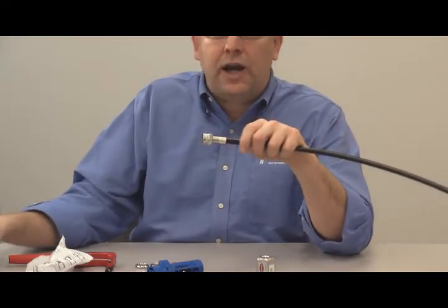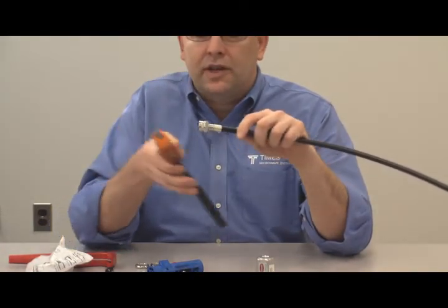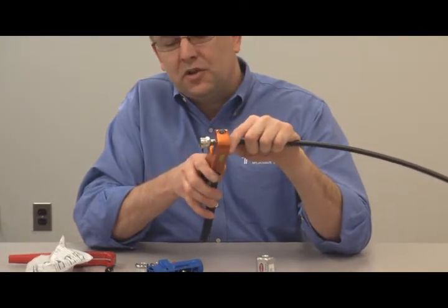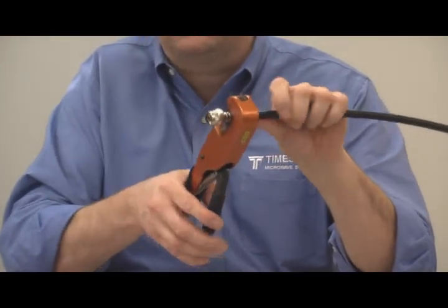At this point, we have a couple different options for crimping. This is our HX4 crimp handle. The nice thing about this tool, it doesn't let you cheat. Once you start crimping, you have to crimp all the way down. It's a ratcheting type handle.